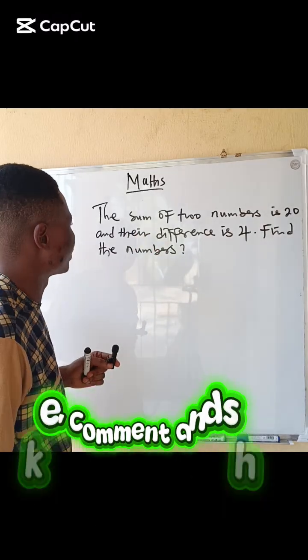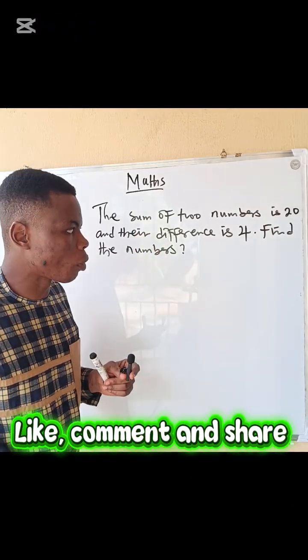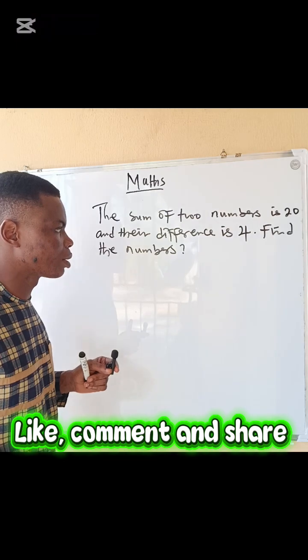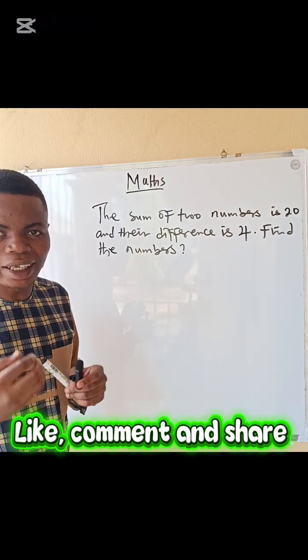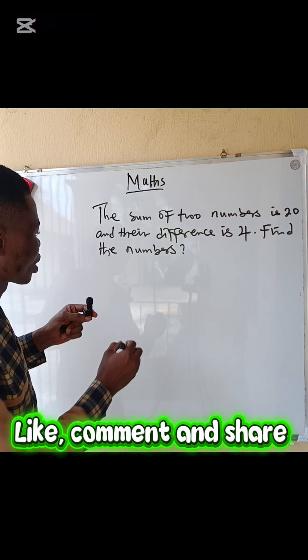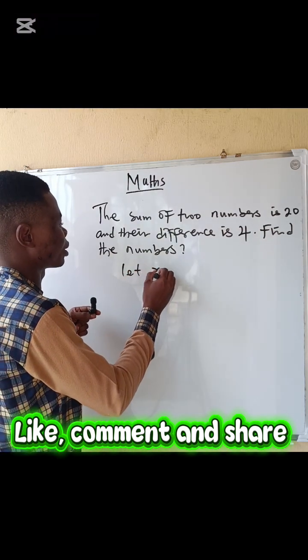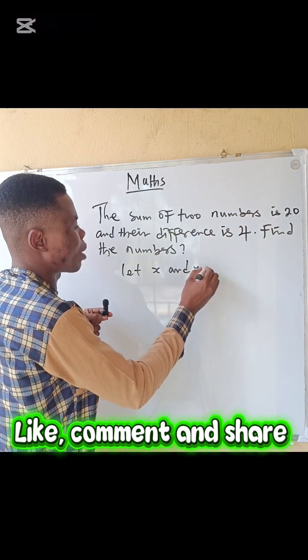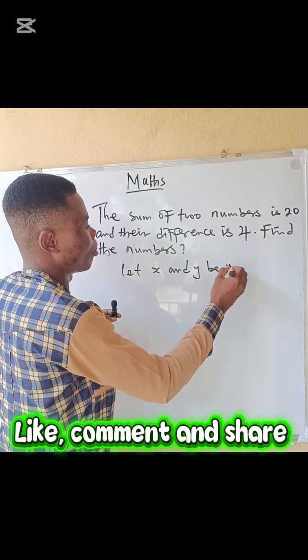The sum of two numbers is 20 and their difference is 4. Find the numbers. What do we do? This is a word problem, so I'm going to let x and y be the numbers.